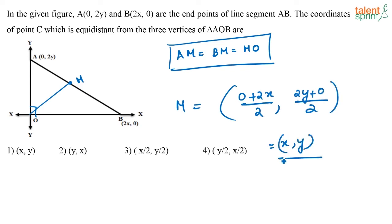That is equal to (x, y). So what is the answer that we are looking for? That is option 1, x comma y. So this point (x, y) will be equidistant from all the three vertices in triangle AOB.